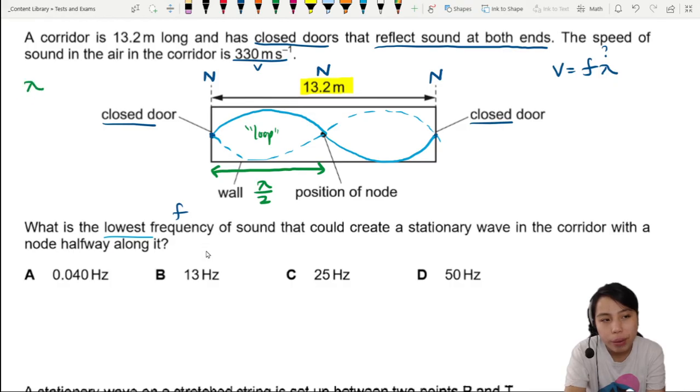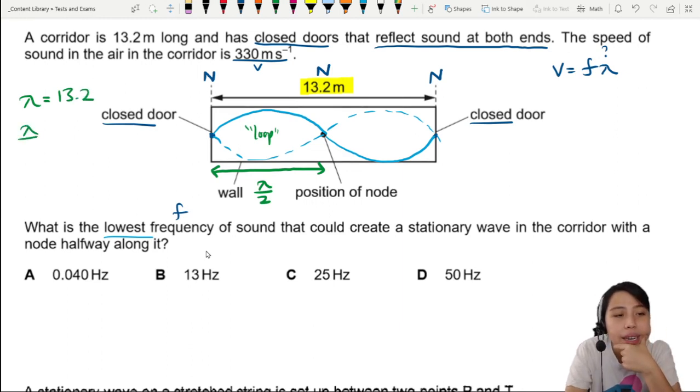So, side calculation here: lambda over 2. You can say lambda, the whole wavelength, is 13.2. Or you can say lambda over 2 is 13.2 over 2.